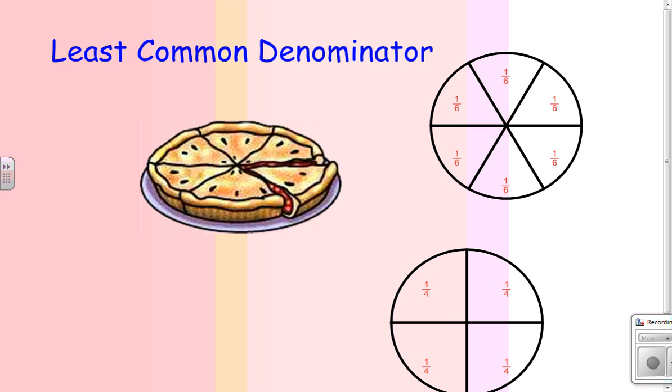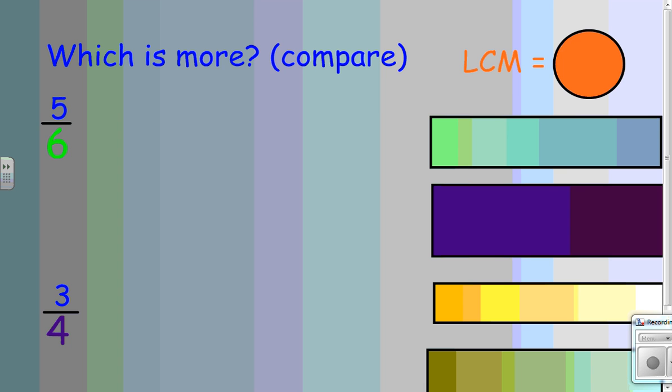So, if I look back here, we have two different denominators. The six, here, and of course, the four, right here.